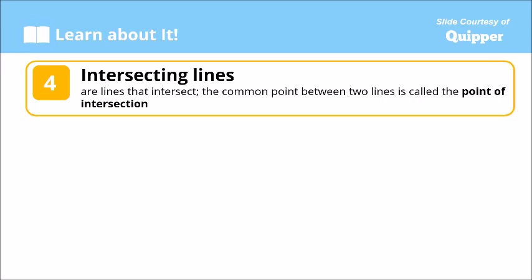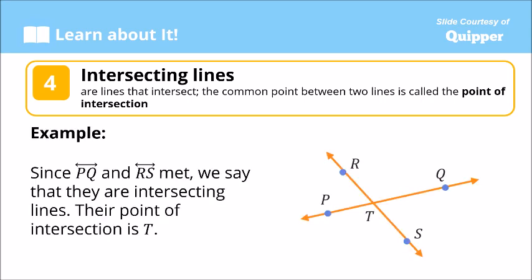We also have what we call intersecting lines. Intersecting lines are lines that intersect — meaning they meet at a common point — and that common point is called the point of intersection. Example: we have Line PQ and Line RS. These two lines meet at the same point. Since Line PQ and Line RS meet, they are intersecting lines. Their point of intersection is Point T.